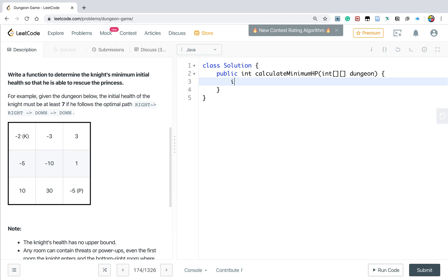Let's write the code now. We first get n, which is dungeon.length. And we need a dp array. It represents the minimum health point we need to reach i,j. And we do some initialization.